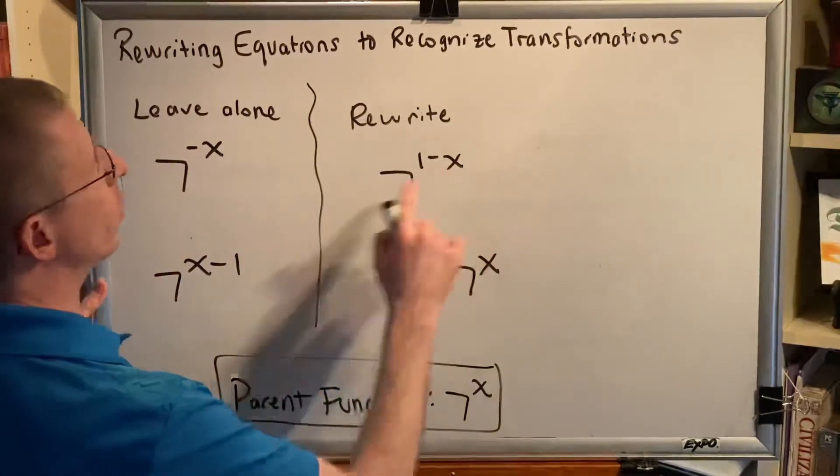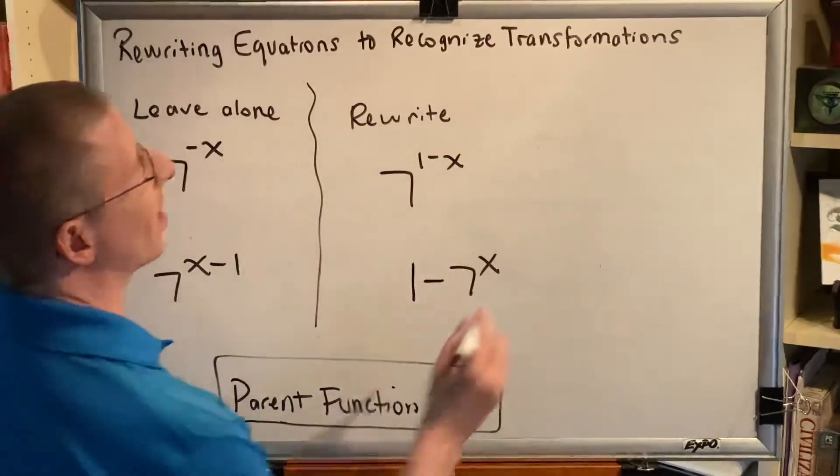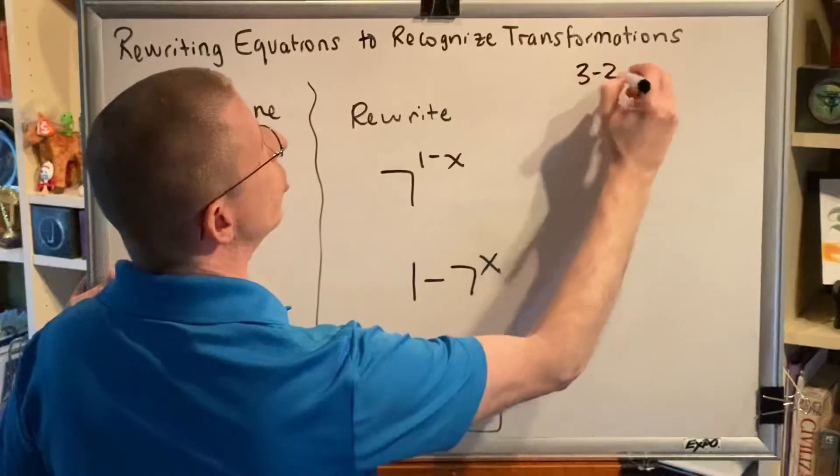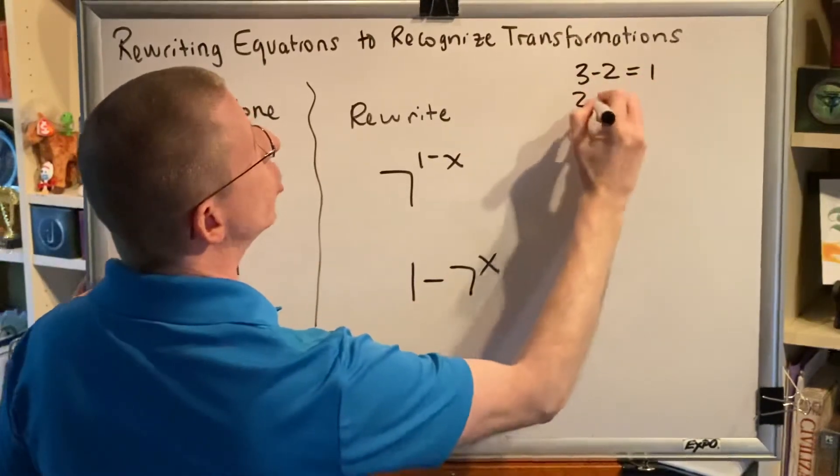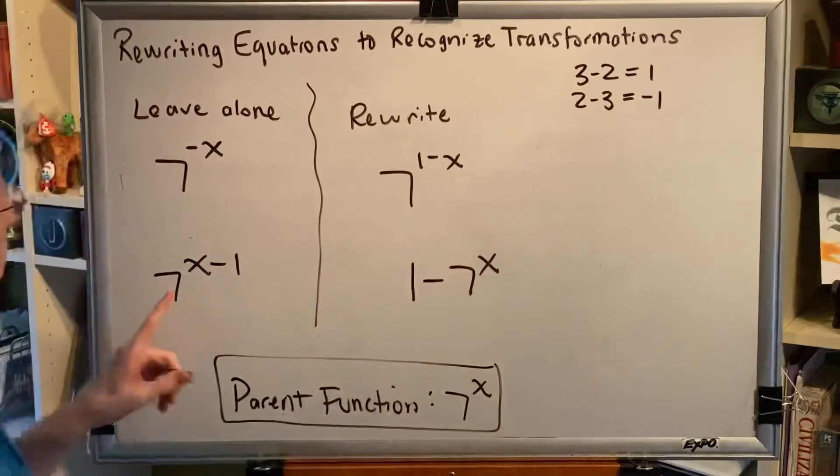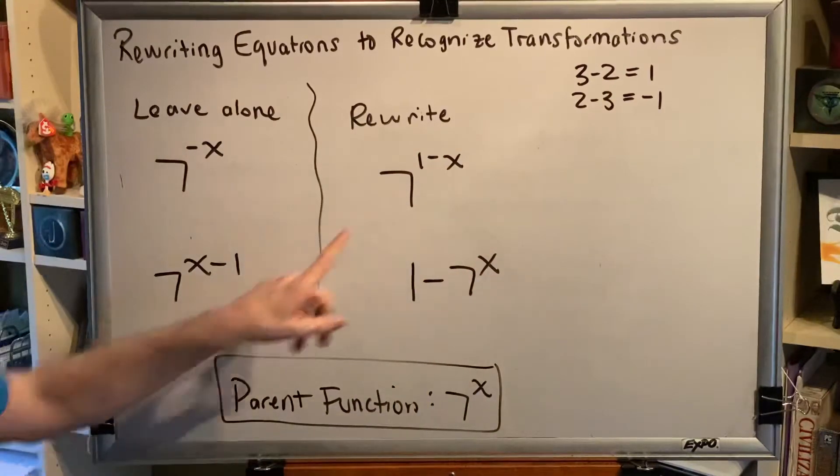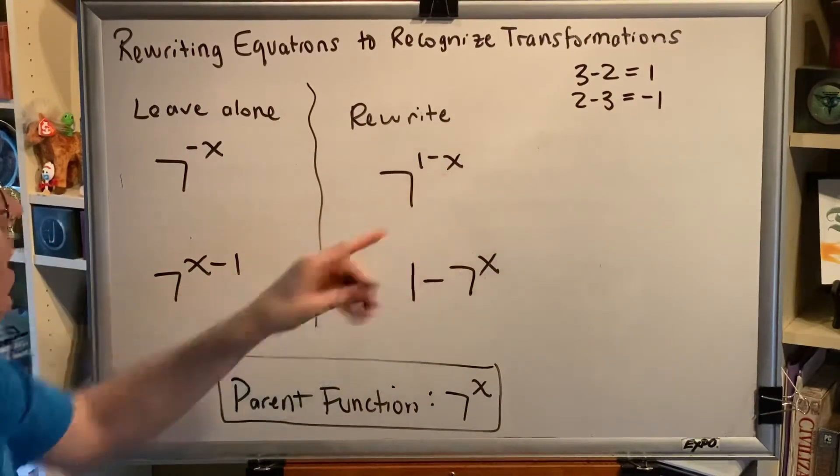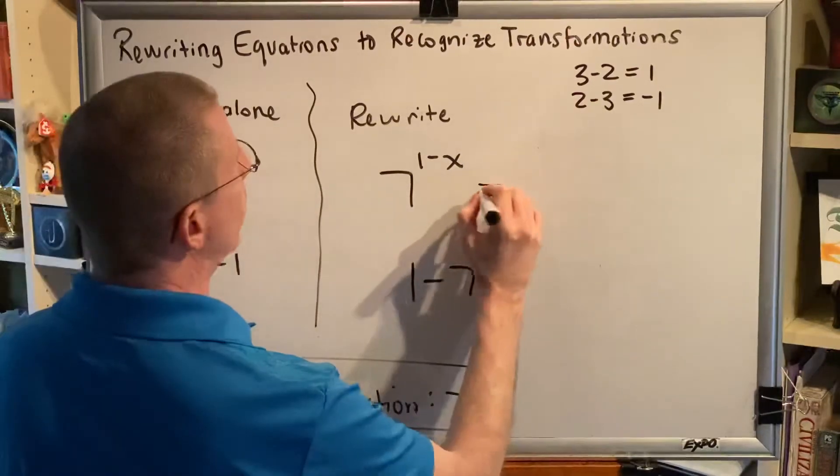We know that when we reverse the order of subtraction, it changes the sign. For example, 3 minus 2 equals 1, but 2 minus 3 equals negative 1. This is in the wrong order. We would prefer it to say x subtract 1, but instead it says 1 subtract x. So we're going to rewrite it as follows.